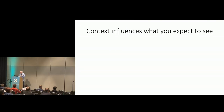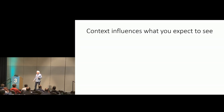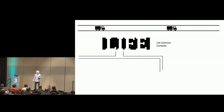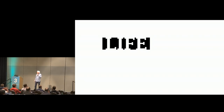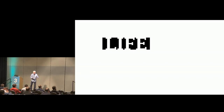Context also influences what you expect to see. Suppose I tell you you're looking at a campus map — you see roads and buildings. Then I tell you there's actually a word hidden in there. Can you see it? Very few people do, because your visual system was expecting a map and saw buildings. When I told you to expect something else, your visual system shifted its perception.